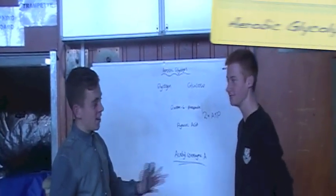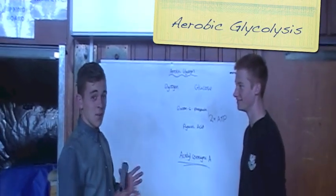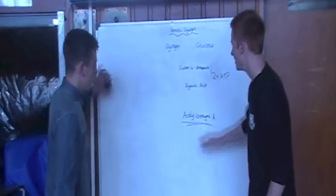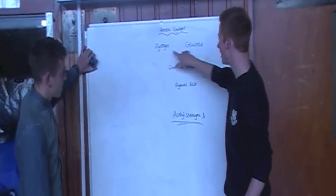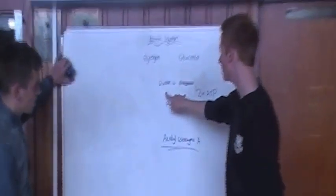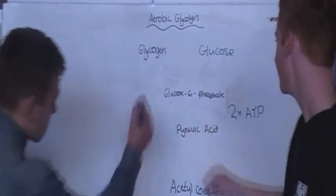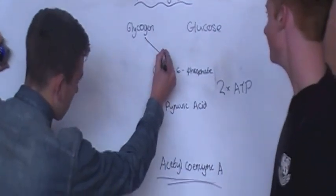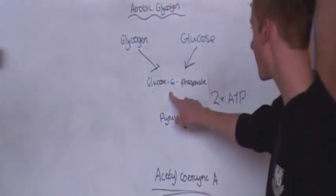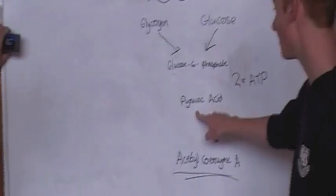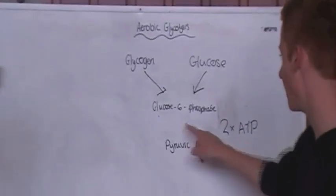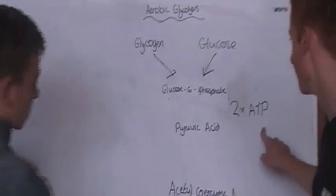My name's Jack and this is my assistant Sully, and today we're going to talk about aerobic glycolysis. Glycogen and glucose are mixed together and broken down into glucose 6-phosphate. This glucose 6-phosphate is then broken down into pyruvic acid, and during this breakdown two ATP molecules are released.